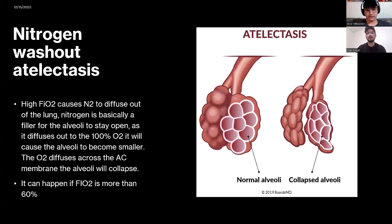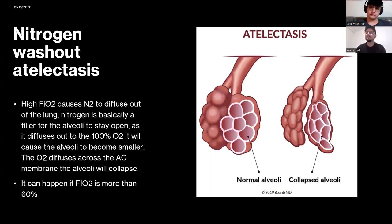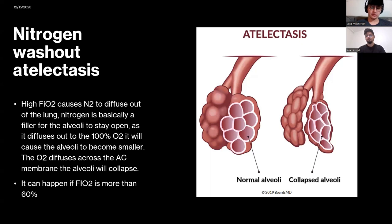Always try to keep FiO2 less than 60% unless absolutely necessary, keeping nitrogen washout atelectasis in mind as it can be very dangerous. Something that can help reopen those alveoli if it occurs is PEP therapy, which helps maintain pressure in the alveoli and keeps the alveolar walls open. Other students will be going over PEP therapies and devices used to keep alveoli open. You can also see on the slide how normal alveoli look versus collapsed alveoli.